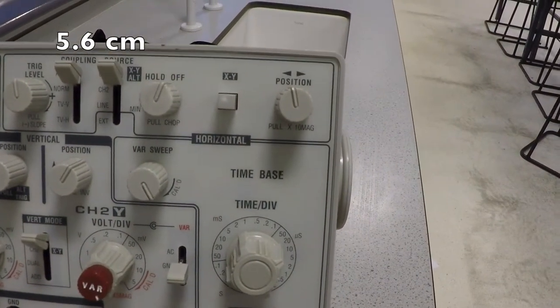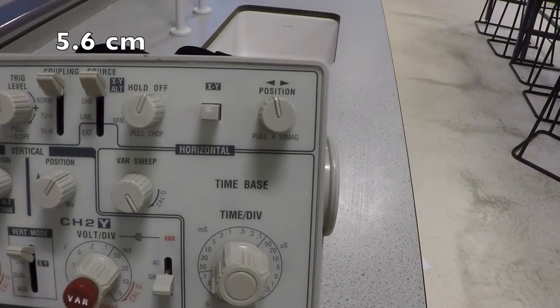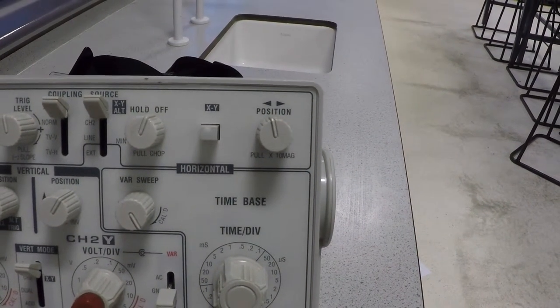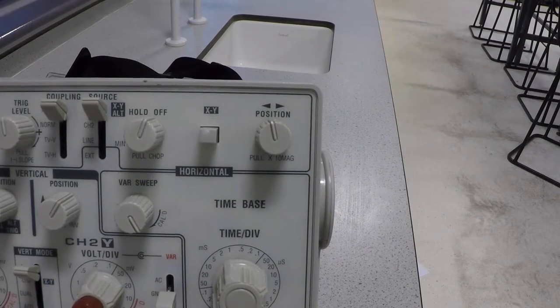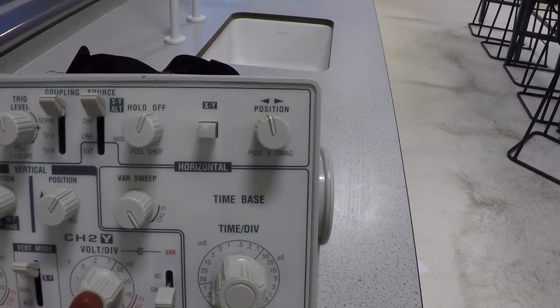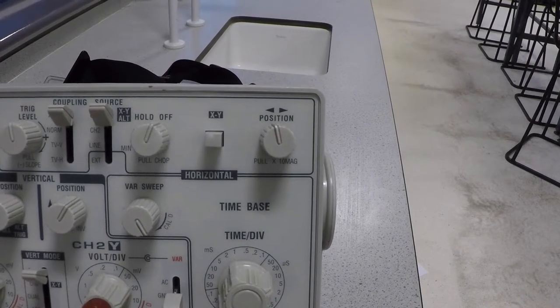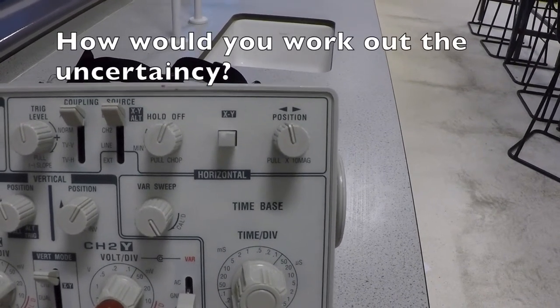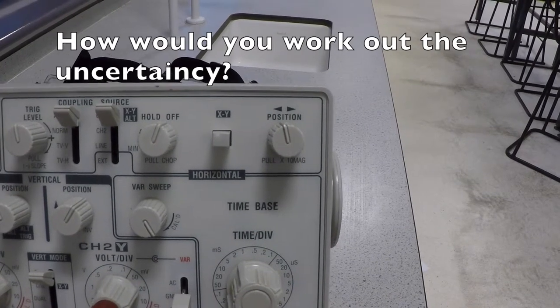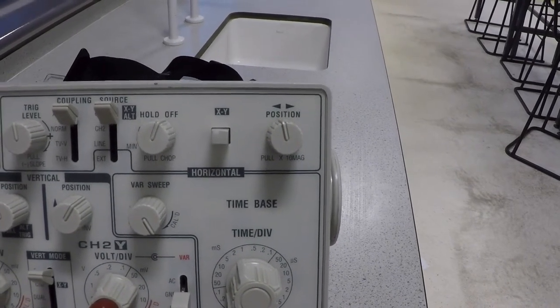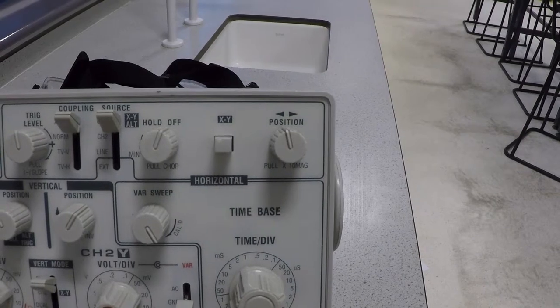Each centimeter is 20 microseconds. So if we take the number of centimeters and we multiply it by the number of microseconds, we can get the period of one wave. Once we have the period, 1 divided by the period should give us a frequency. So that's how you work out the frequency.